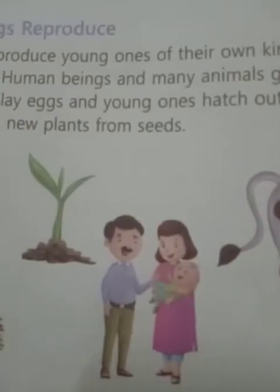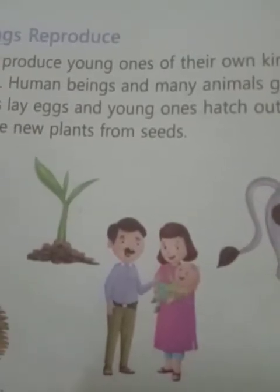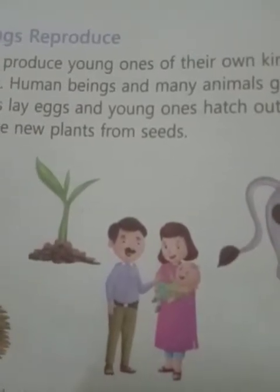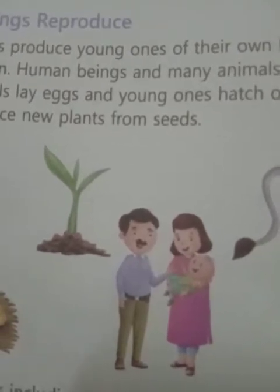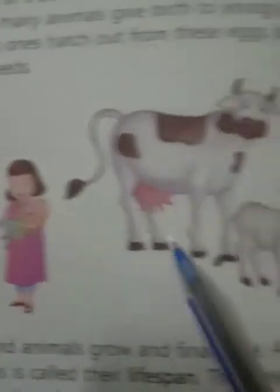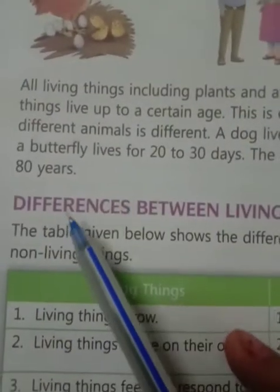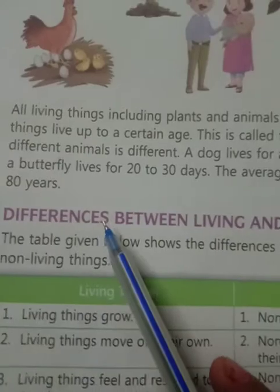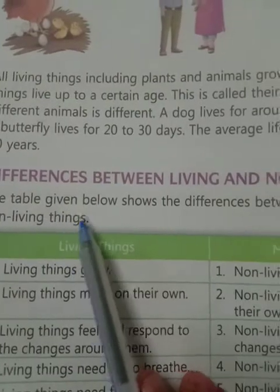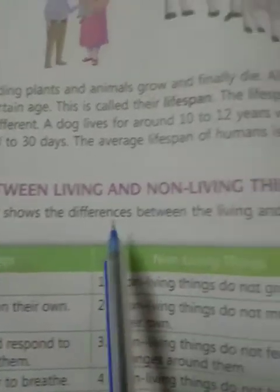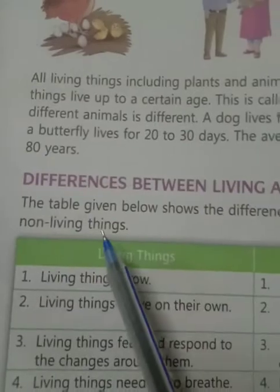Next, living things reproduce. Living things produce young ones of their own kind. Now today's topic is the differences between living and non-living things. The table below shows the differences between living and non-living things.